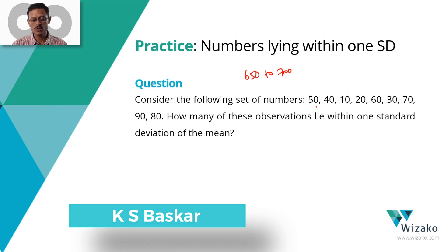Consider this following set. It's got these numbers 50, 40, 10, 20, 60, 30, 70, 90, 80. We'll count the number of elements to start with: 1, 2, 3, 4, 5, 6, 7, 8, 9. So this data set has got 9 observations.